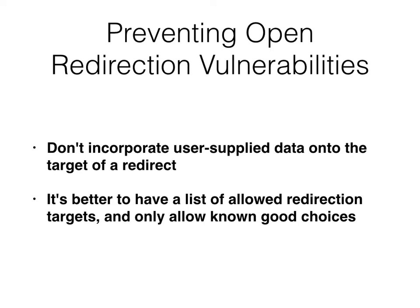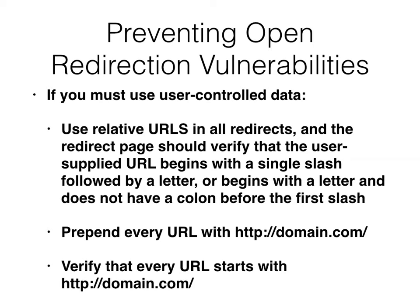If you want to prevent these things, don't put user-supplied data as the target of a redirect. It's much better to have a list of known choices and just choose among the known good choices. If you have to, then use relative URLs in all redirects and verify them correctly. Another thing is to prepend every URL with the whole domain including the slash, and verify that it all starts with that domain including the slash. Those are all pretty good defenses.